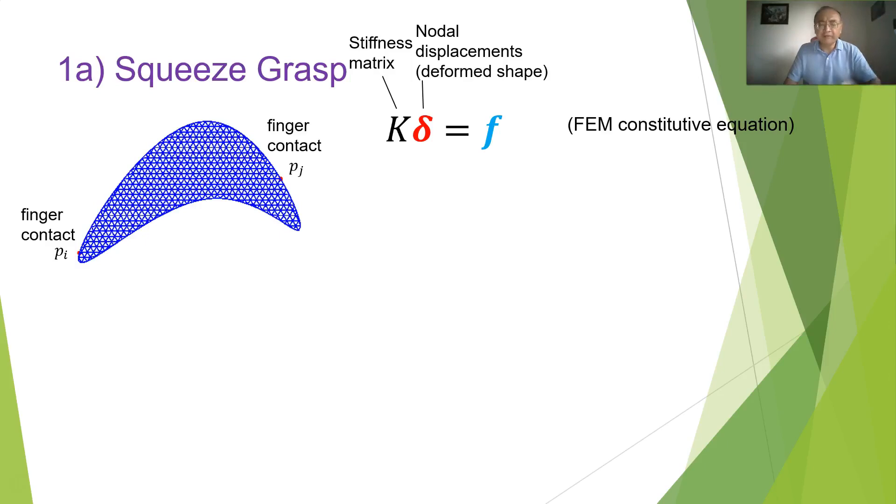Because you can never know the forces, you cannot control it, because the forces is due to deformation. So the first topic we look at is a very simple strategy, which is a squeeze grasp. You just have, for instance, two fingers making point contact with the object and squeeze them.